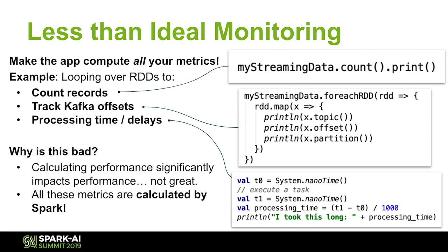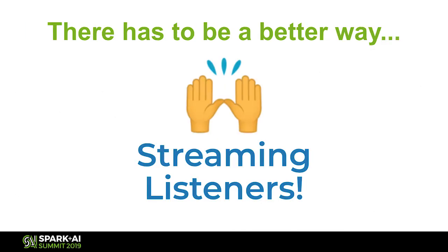Tracking offsets requires looping over every single RDD to get the max. For processing time and delays, we had naive tracking — start with a system time, execute a task that would have to be an action, not a transform, and print out the result when done. But that's not super great, and if you combine all three of those approaches, they resulted in multiple minutes of delays sometimes for a given sub-minute batch. And that is where Spark listeners come in.